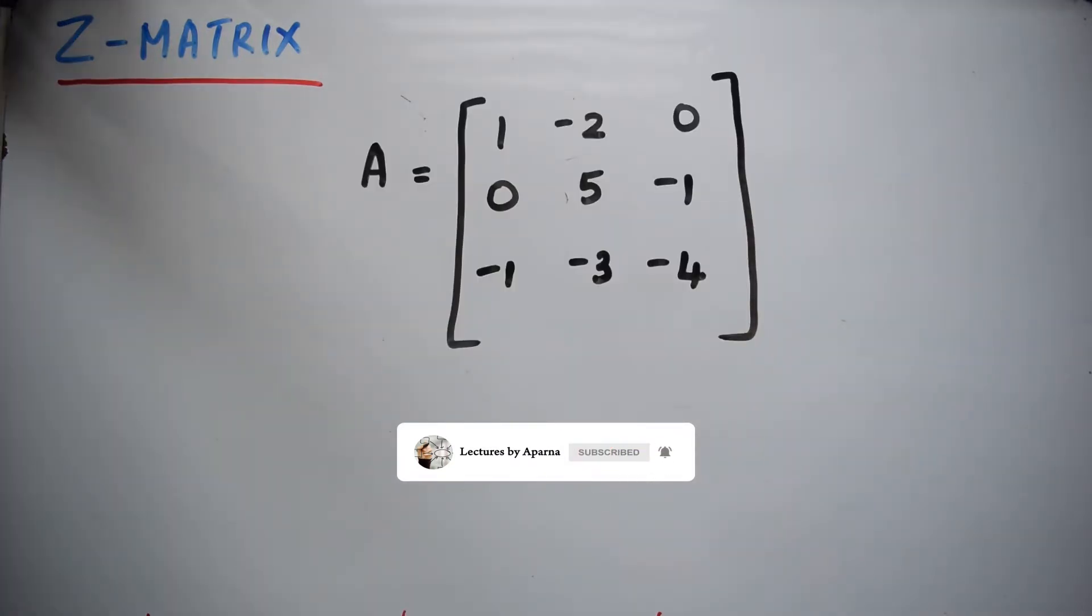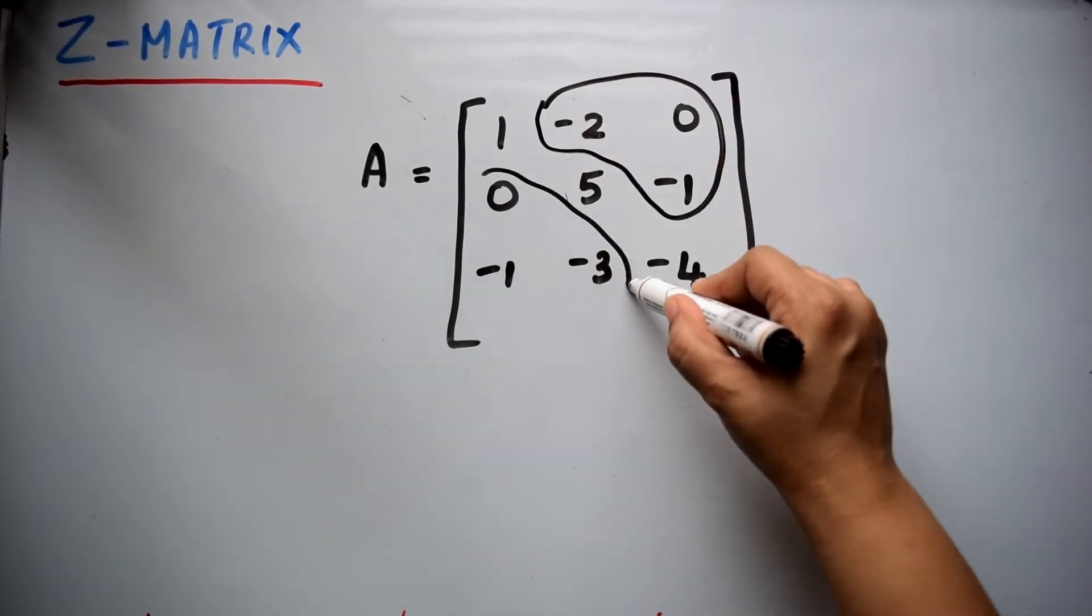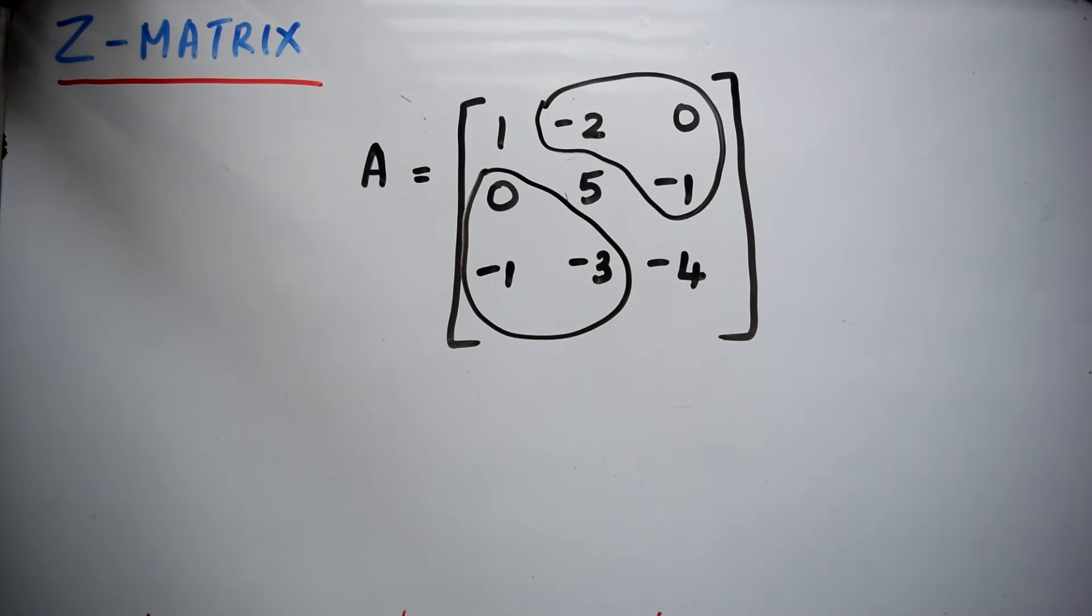For example, consider a 3 by 3 matrix like this. Here, the off-diagonal elements, that is these elements, they are less than or equal to zero.